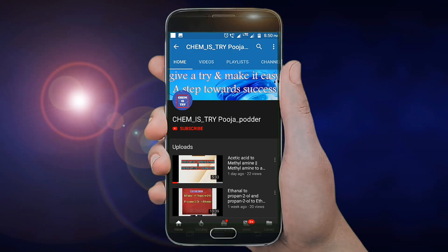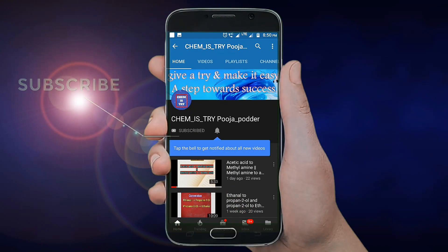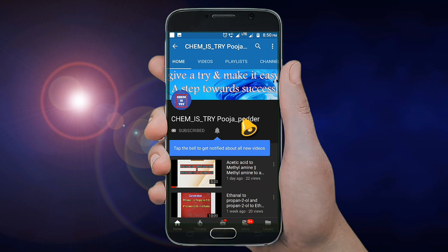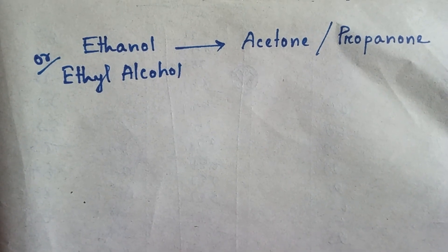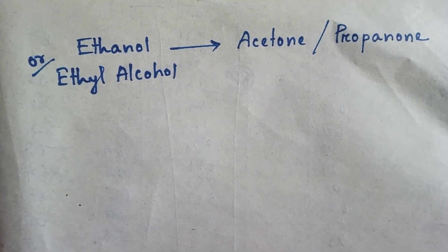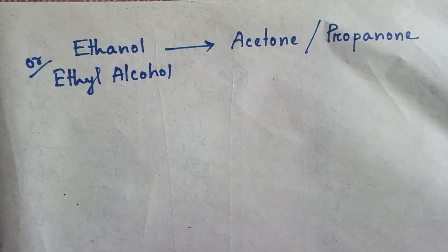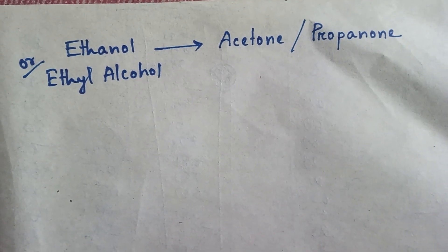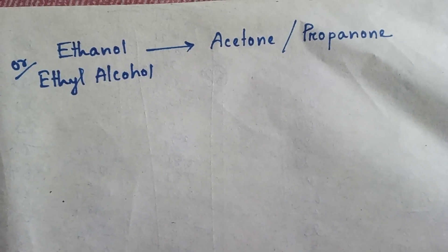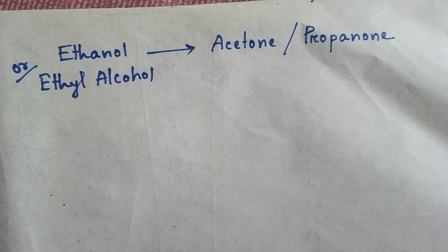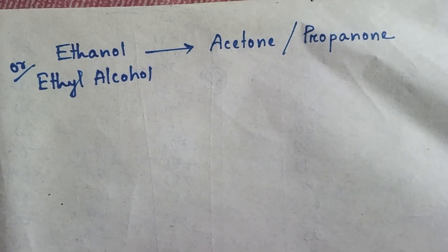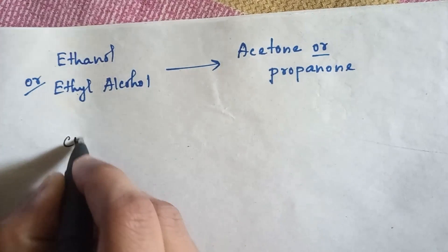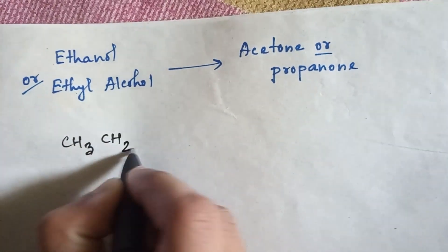Hello everyone, welcome to my traditional chemistry channel. Subscribe by clicking the subscribe button and press the bell icon so that you never miss any updates. Today we are going to do one chemical conversion: from ethanol or ethyl alcohol to acetone or propanone, and the reverse process from acetone or propanone to ethyl alcohol or ethanol. Let's start. First, let's write the formula of ethyl alcohol: CH3CH2OH.